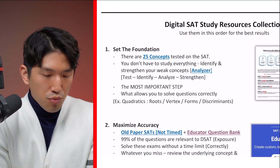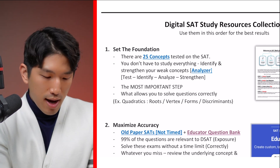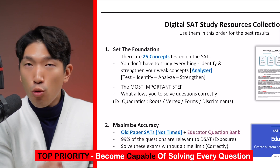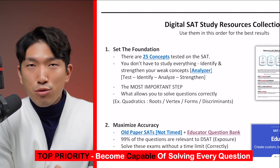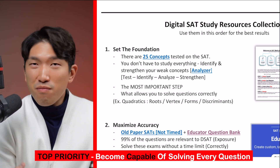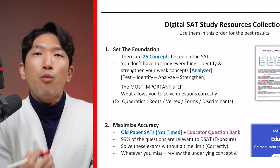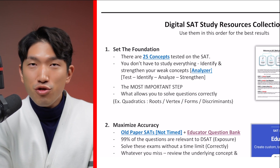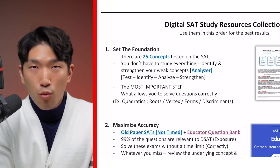The very first resource we're going to use is to set a strong foundation. What I mean by that is we're first going to get you capable of solving every, if not most, of the questions tested on the SAT. Because what's the point of using the next three resources to do additional practice when you can't solve most of the questions? It's not only a waste of your valuable time, but also a waste of limited resources. So if you're currently not scoring over 700, drop all the practice exams and let's start with step one.